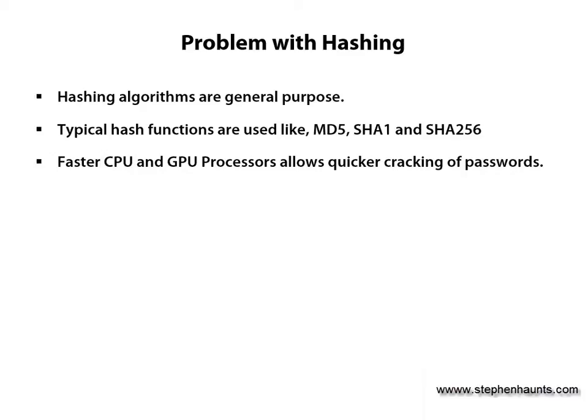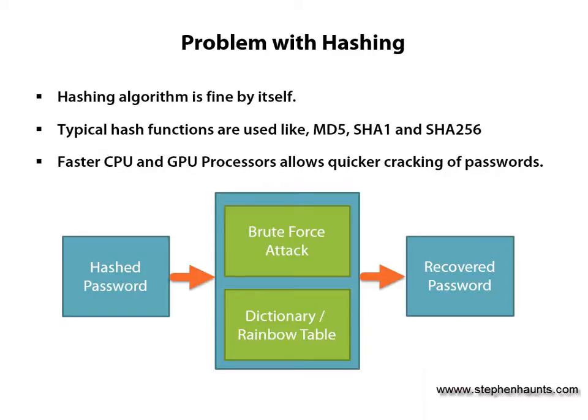As CPUs and GPUs are getting faster, you can write code to make recovering a hashed password easier and quicker. With these faster CPUs, you can do two types of attack against a hashed password: brute force and rainbow tables. A brute force attack is an attack in which a computer tries every possible combination of characters for a password until it succeeds. A rainbow table is a pre-computed table for reversing cryptographic hash functions. Rainbow tables are huge dictionaries and as computers get faster, you can search for a password a lot quicker.